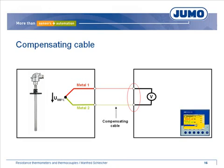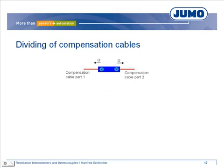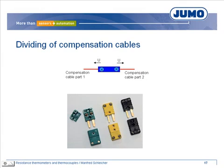You must use the corresponding compensation cables and consider the polarity. By using several sections of compensation cables connected with, for example, luster terminals, new thermocouples arise due to the different materials. The voltages are compensated when the different sections have the same temperature. When the temperature can differ, you must use connectors free of thermoelectric voltage, made of materials with the same thermoelectric characteristics as the thermocouple, and select the correct connector considering polarity.